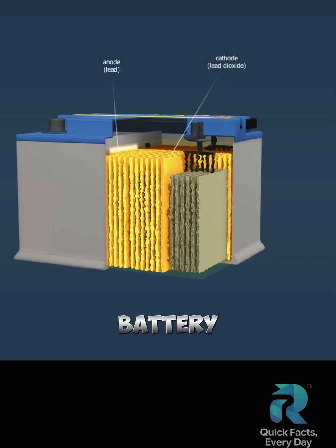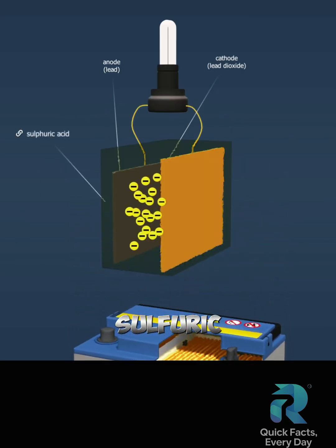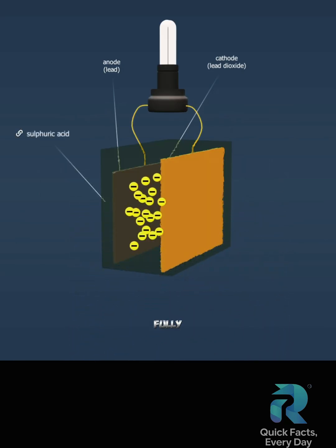In the lead-acid battery, there are two electrodes within a cell immersed in a solution of water and sulfuric acid. When the battery is fully charged, these two electrodes are a positively charged lead-dioxide plate and a negatively charged lead plate. The electrolyte in the battery is the sulfuric acid solution.